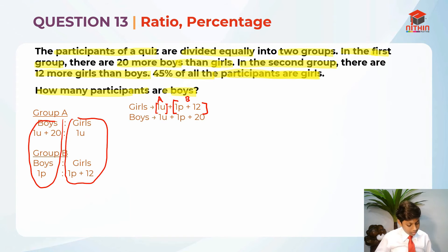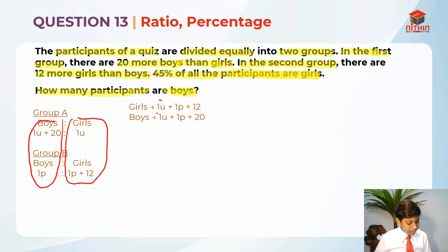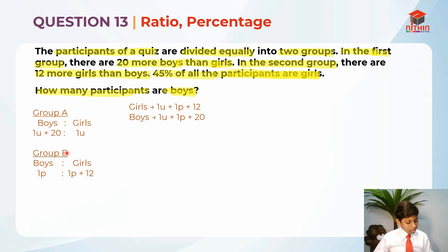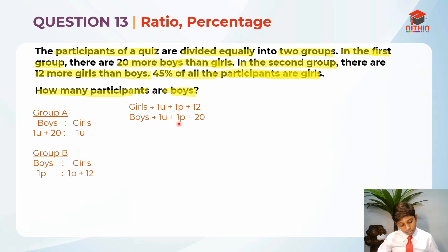For the boys column: 1 unit came from group A. So for girls we have 1 unit plus 1 part plus 12, and for boys we have 1 unit plus 1 part plus 20. I'm lining up the units, the parts, and the whole numbers together.